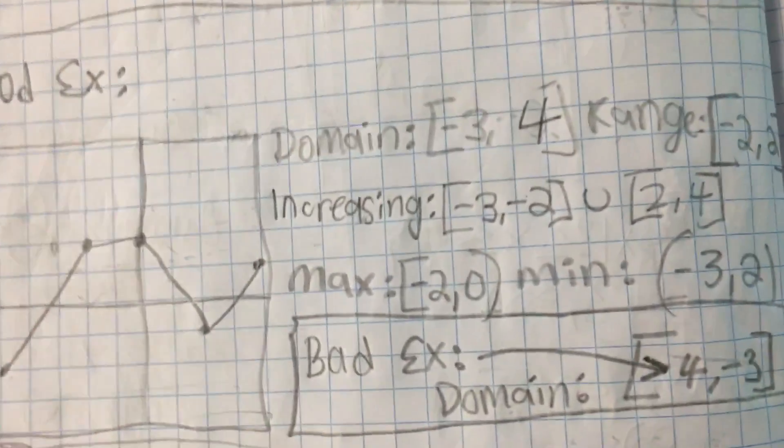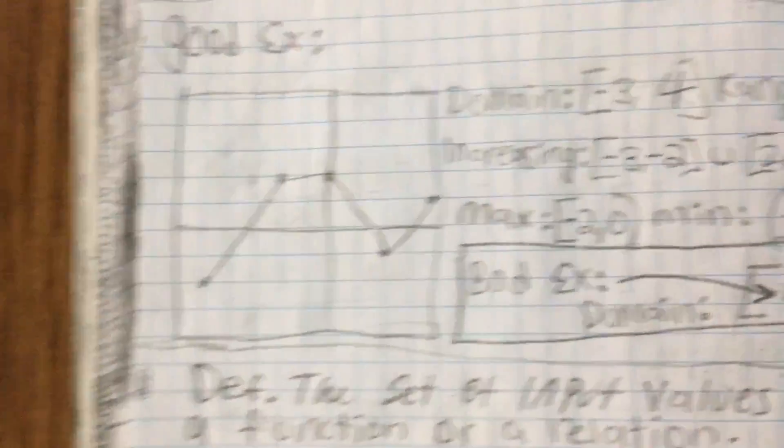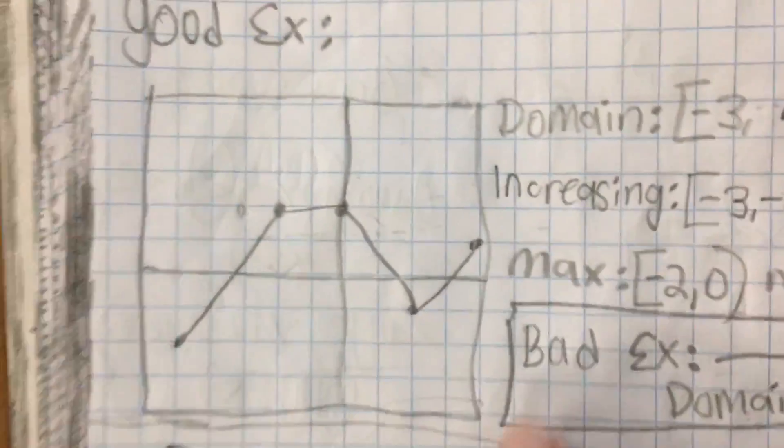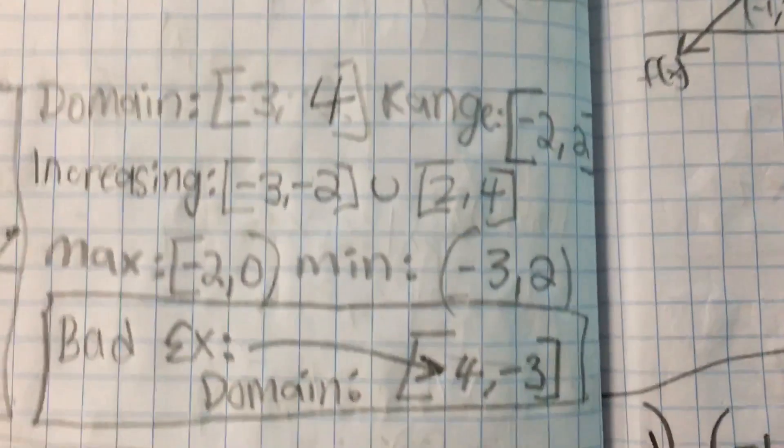Increasing negative 3 comma negative 2, and square brackets because it's like a line right there. And then also 2 comma 4.